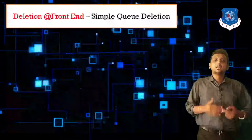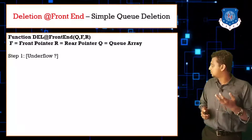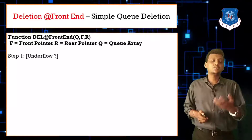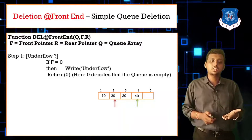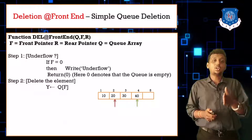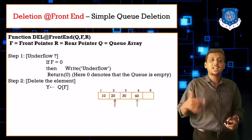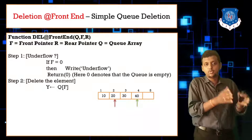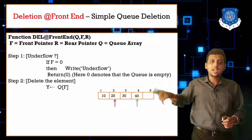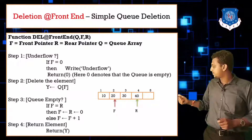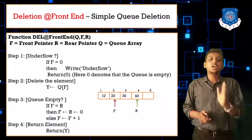Now deletion at front end, which is similar to simple queue deletion. The function takes parameters Q, F, R. First check underflow: if F equals 0, then queue is underflow, return 0. Otherwise assign Q of F to Y. Then check if F equals R (same position): if yes, set both F and R to 0; else increment the front pointer. Finally return Y.